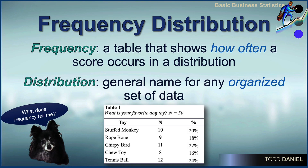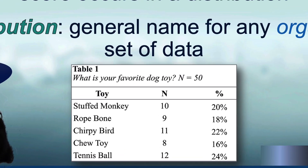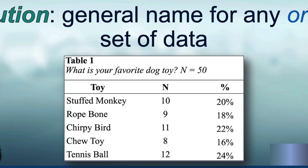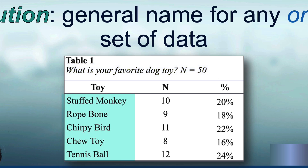In this frequency table, we see in our very first column labeled 'toy' all of the categories that exist in our data set. We asked 50 dogs what is your favorite dog toy, and there were five general answers: stuffed monkey, rope bone, chirpy bird, chew toy, and tennis ball.